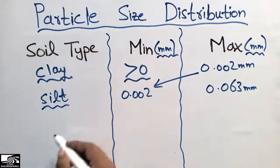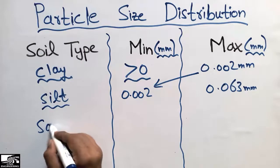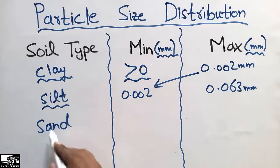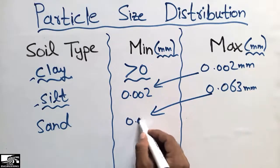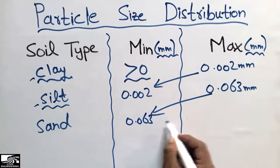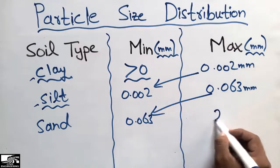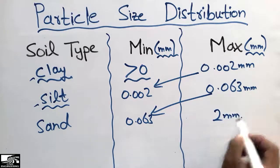The third type of soil is sand. Sand particle sizes are greater than silt and clay. Its minimum size ranges from 0.063 millimeter and its maximum size up to 2 millimeters.